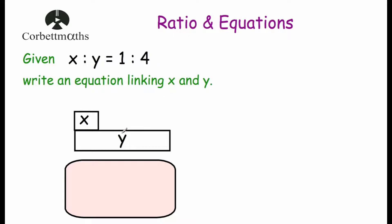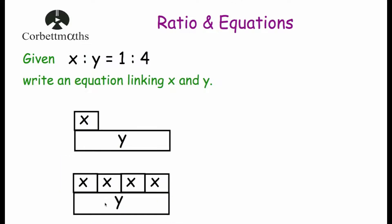We need to write an equation linking x and y. We know y is 4 times larger than x, so if we multiply x by 4 we get y. That gives us the equation y equals 4x. There's a shortcut: multiply x by the y number in the ratio, and multiply y by the x number in the ratio. That gives y times 1 equals y, and x times 4 equals 4x. So y equals 4x.